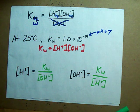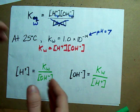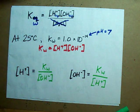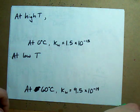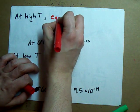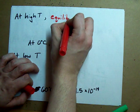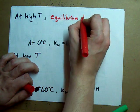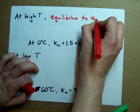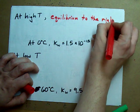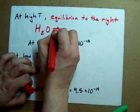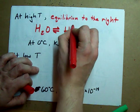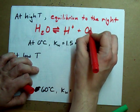Here's the last thing I want to say about Kw, which is that it's affected by temperature. It is an equilibrium after all. Now, at high temperature, the equilibrium is shifted to the right. Remember that this is the equilibrium we're dealing with. H2O breaks up into H-plus and OH-minus.